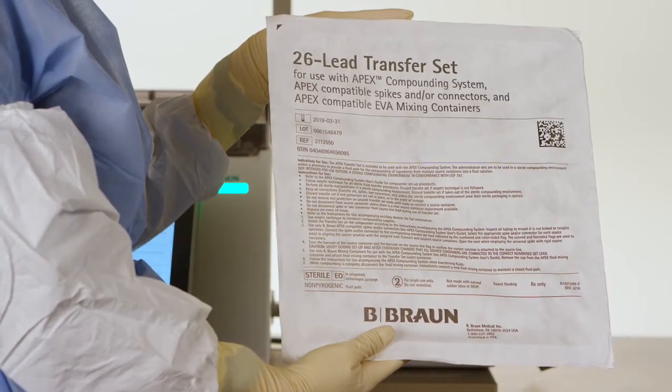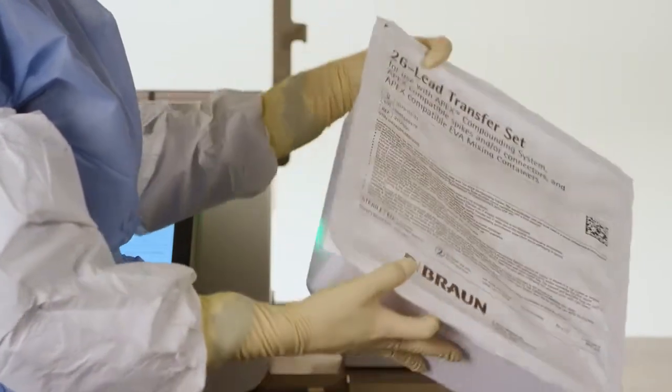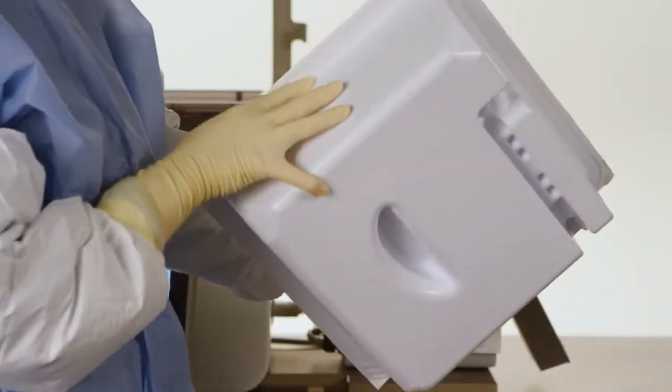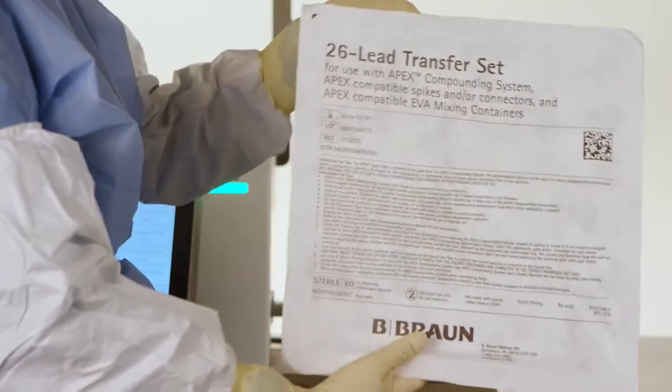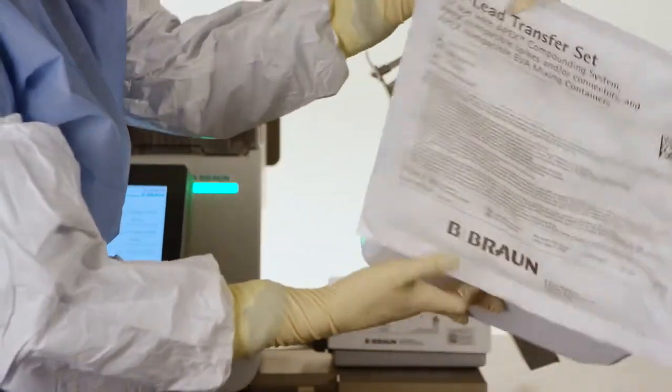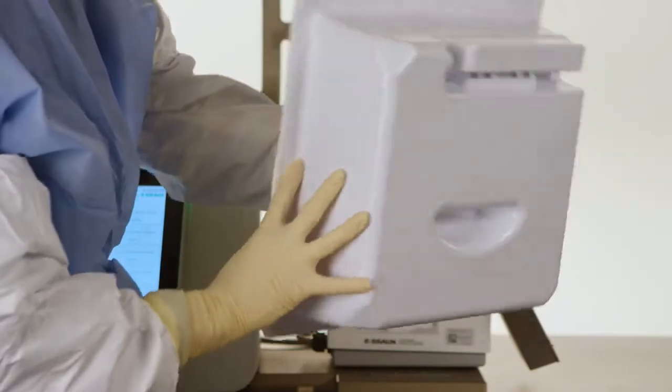Obtain a transfer set package and visually inspect it to ensure the packaging is not compromised. Check that the seal is intact and that there are no holes in the packaging. If the seal is broken or the transfer set packaging is not intact, discard the transfer set.